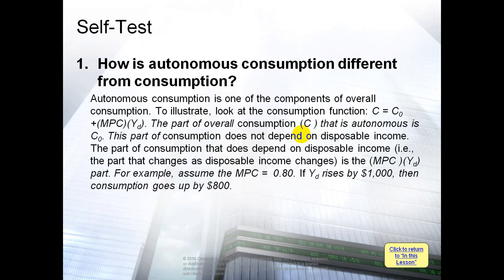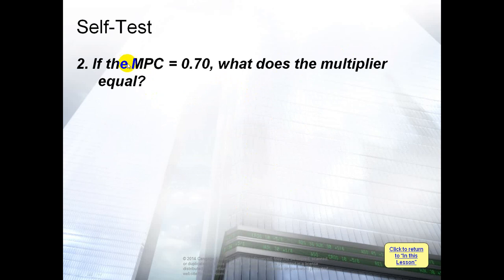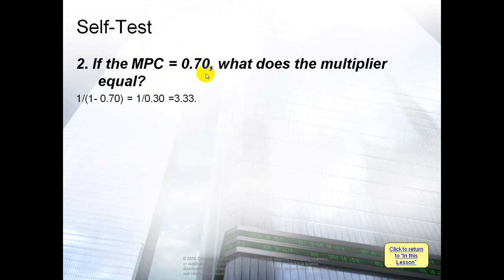Here is a practice problem: if the MPC (marginal propensity to consume) is 0.70, what does the multiplier equal? M = 1 / (1 - 0.70) = 1 / 0.30 ≈ 3.33. So we multiply 3.33 by the change in autonomous consumption. This is how we find the multiplier — very easy.